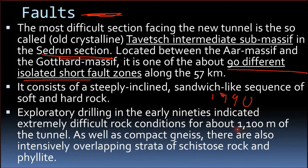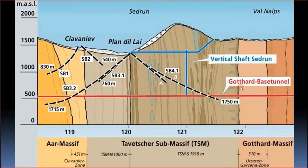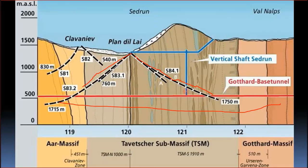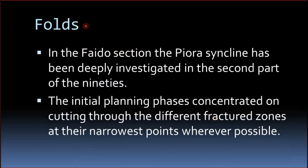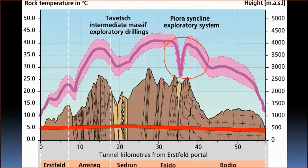About 1,100 metres of the tunnel posed significant risk. The black markers show exploration adits. The red line is the tunnel path. There are numerous fault zones. The Piora Syncline is located in the Faido section — there is a syncline with a gypsum cap above it that could slide down, so special measures were taken during construction.